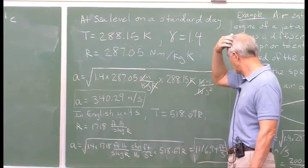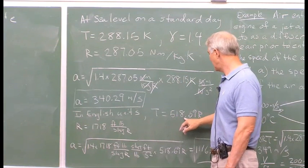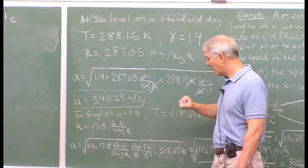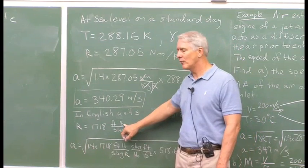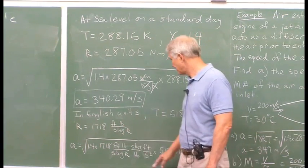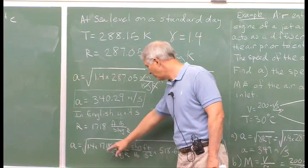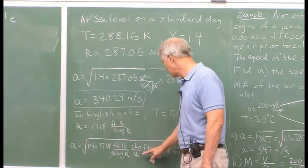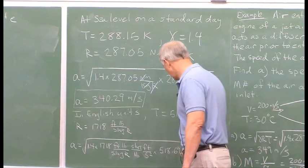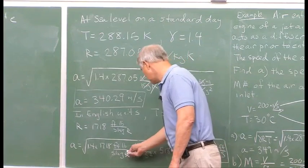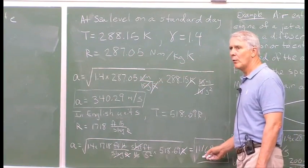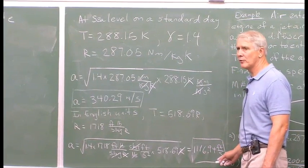In English units, the standard temperature is 518.69 Rankine, and R for air is 1718 foot-pounds per slug-R. A pound-force is a slug-foot per second squared by definition. Plugging in: A equals the square root of 1.4 times 1718 ft·lbf/(slug·R) times 518.69 R. The Rankine, slug, and pound units all cancel, leaving feet squared per second squared under the square root. Taking the square root gives 1,116.94 feet per second — that's the speed of sound at sea level.